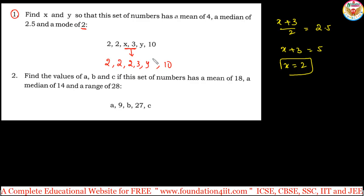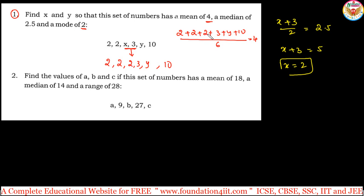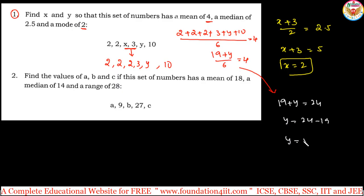To find y, we use the mean condition. The mean is 4, so sum of observations divided by 6 equals 4. The sum is 2 + 2 + 2 + 3 + y + 10 = 19 + y. So (19 + y) / 6 = 4, which gives 19 + y = 24, and therefore y = 5.